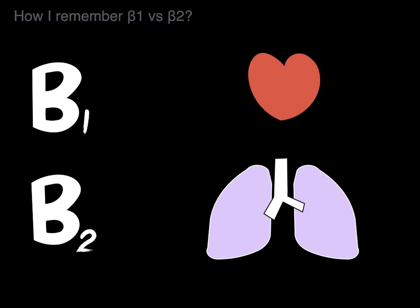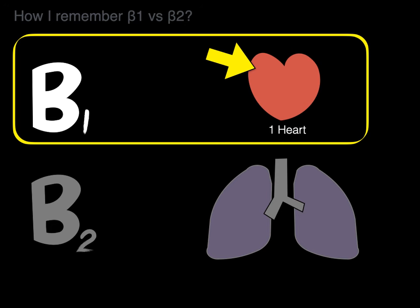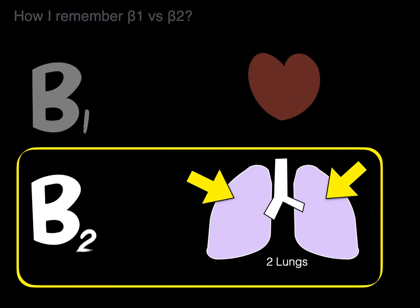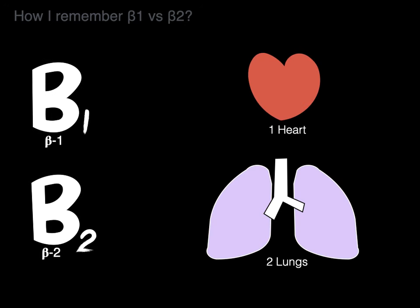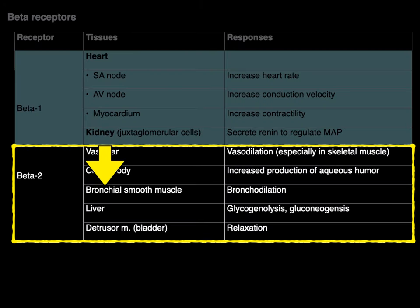How do I remember what beta-1 does versus beta-2? You have one heart and you have two lungs — beta-1, beta-2. I hope that's helpful.